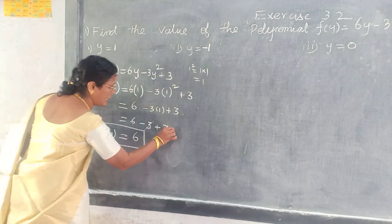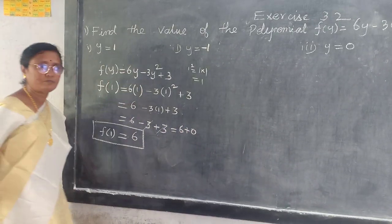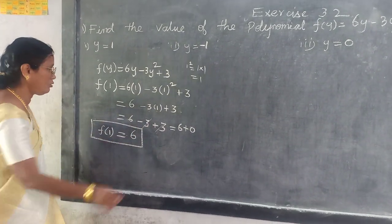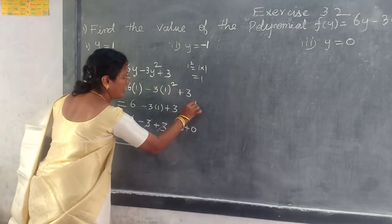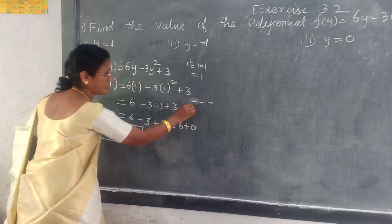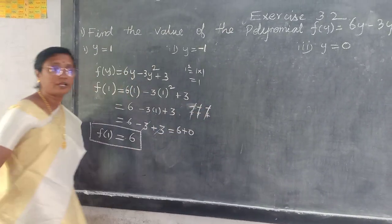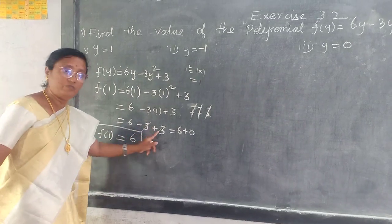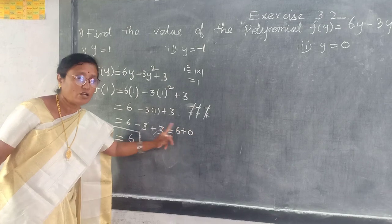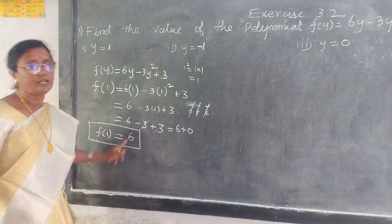If you want, you can write 6 plus 0. Plus 3 minus 3 get cancelled. How much minus 3 will get? 3 minus 3. How much plus 3 will get? So in this place what you have to write? 0. If you are not writing 0, you can write the answer directly. 0 equals 0.